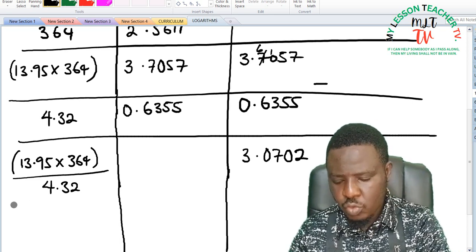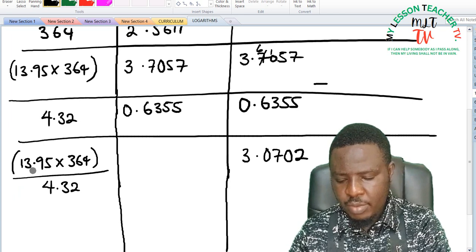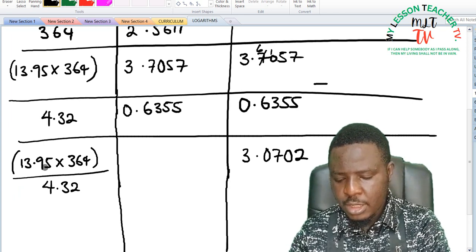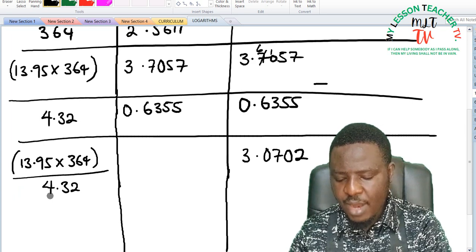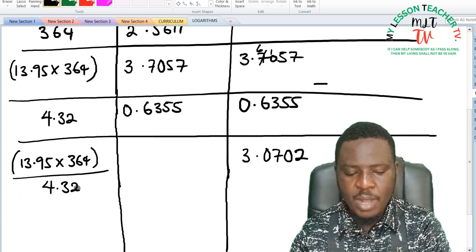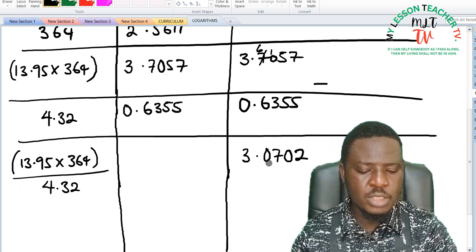So this is equivalent to 13.95 times 364 divided by 4.32 in number is equivalent to 3.0702 in log.